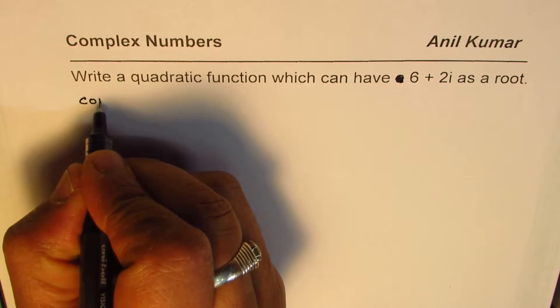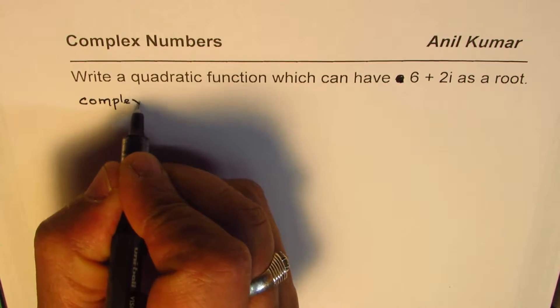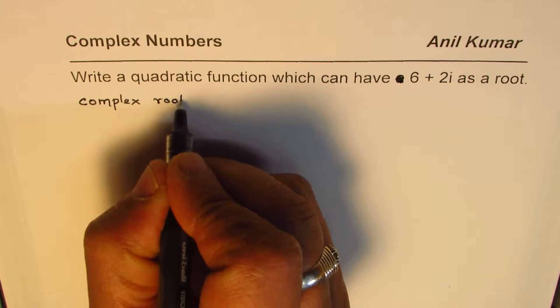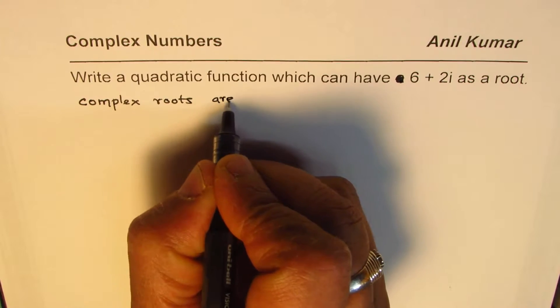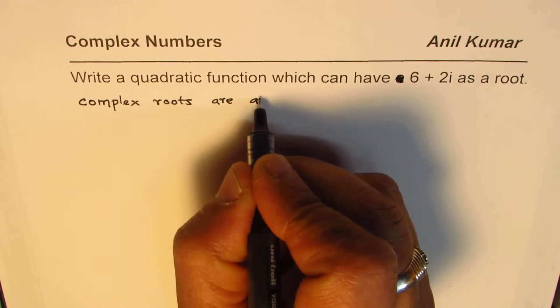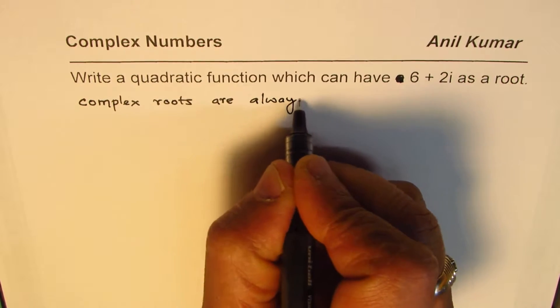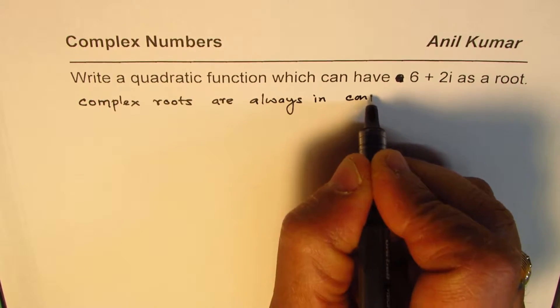Always, you know, complex roots are in pairs. So, let us write down. Complex roots are always in conjugate pairs.